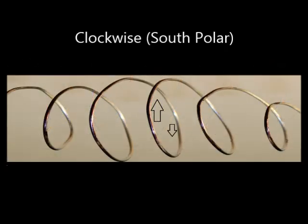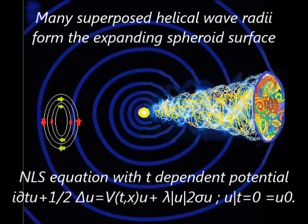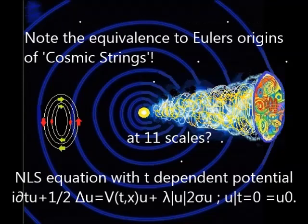Many such co-rotating helical quantum state fluctuations may exist at any point on the expanding sphere surface and at all scales. Euler's original equations producing cosmic strings are rather equivalent to these evolving superposed fluctuations.